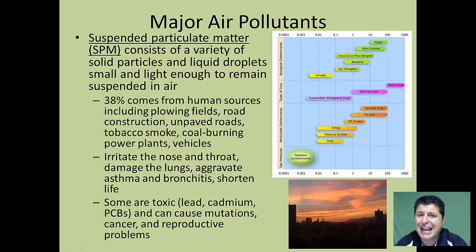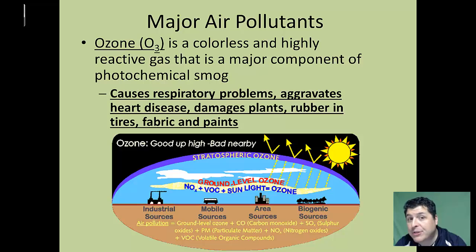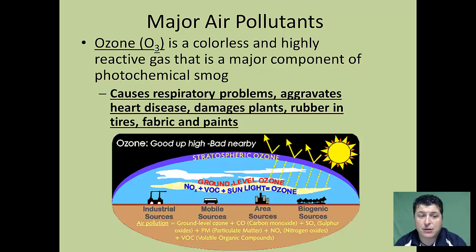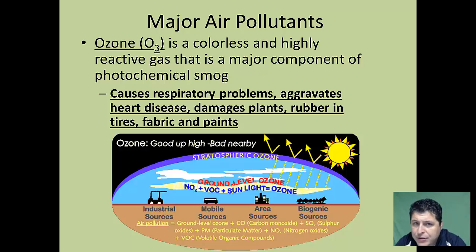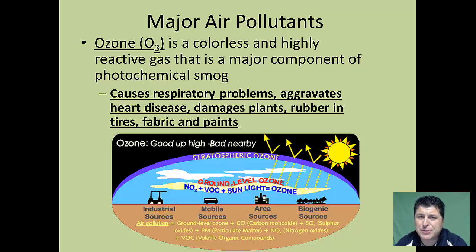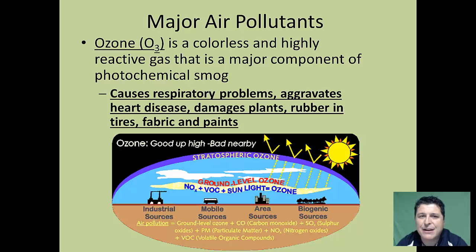Ground-level ozone, or tropospheric ozone, is another major air pollutant — a colorless and highly reactive gas that is a major component of photochemical smog. Ground-level ozone can cause respiratory problems, aggravate heart disease, damage plants, damage rubber and tires, and discolor and weaken fabric and paints.